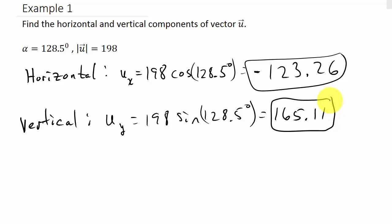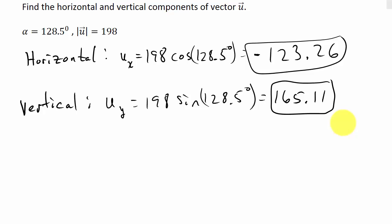So that's your horizontal and vertical component. That would be, let me show you when we draw it out what we have. Okay, so the vector, the magnitude is 198, the direction angle is 128.5. So that would be that vector there.